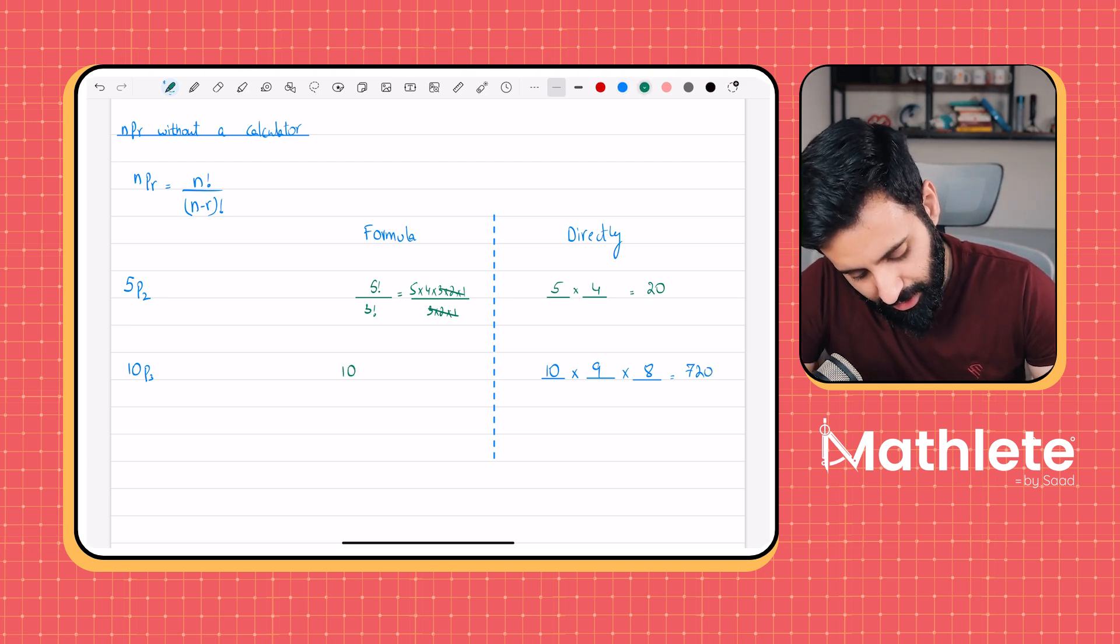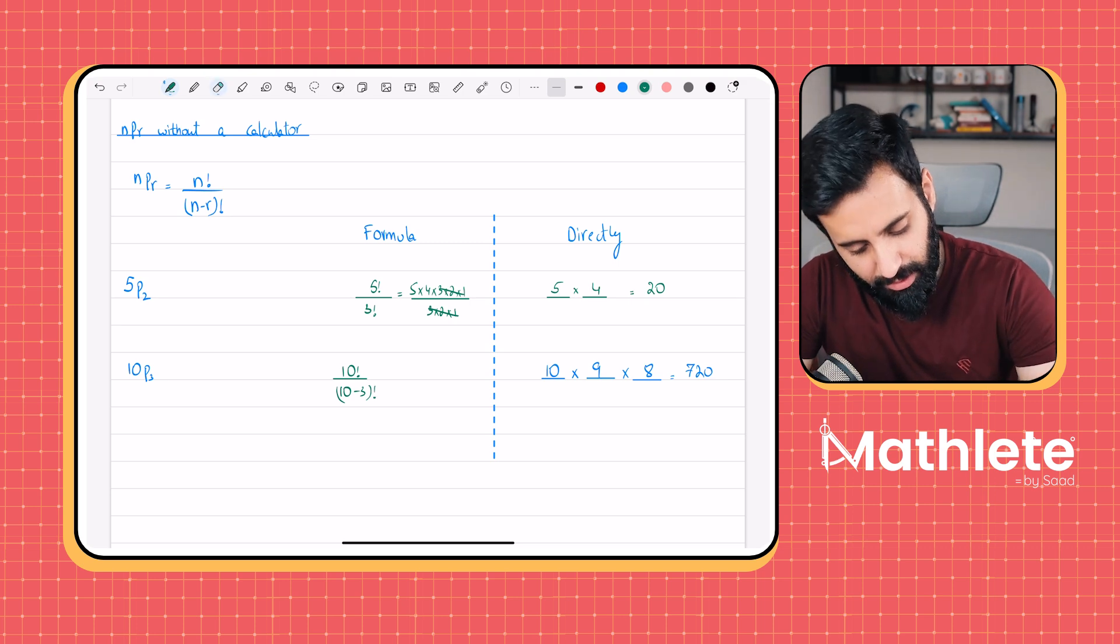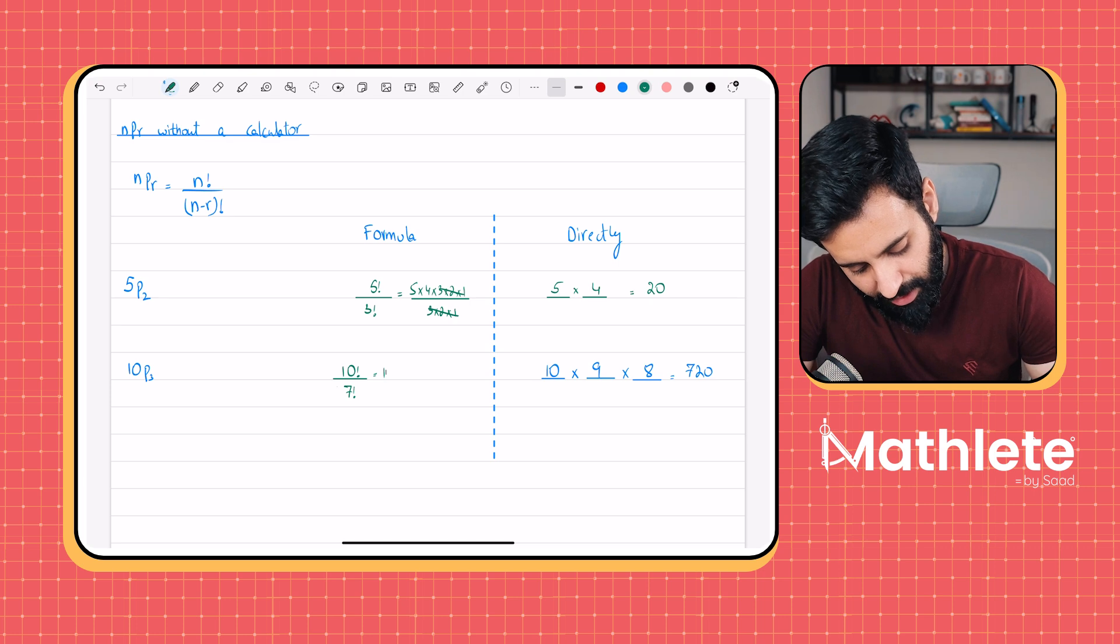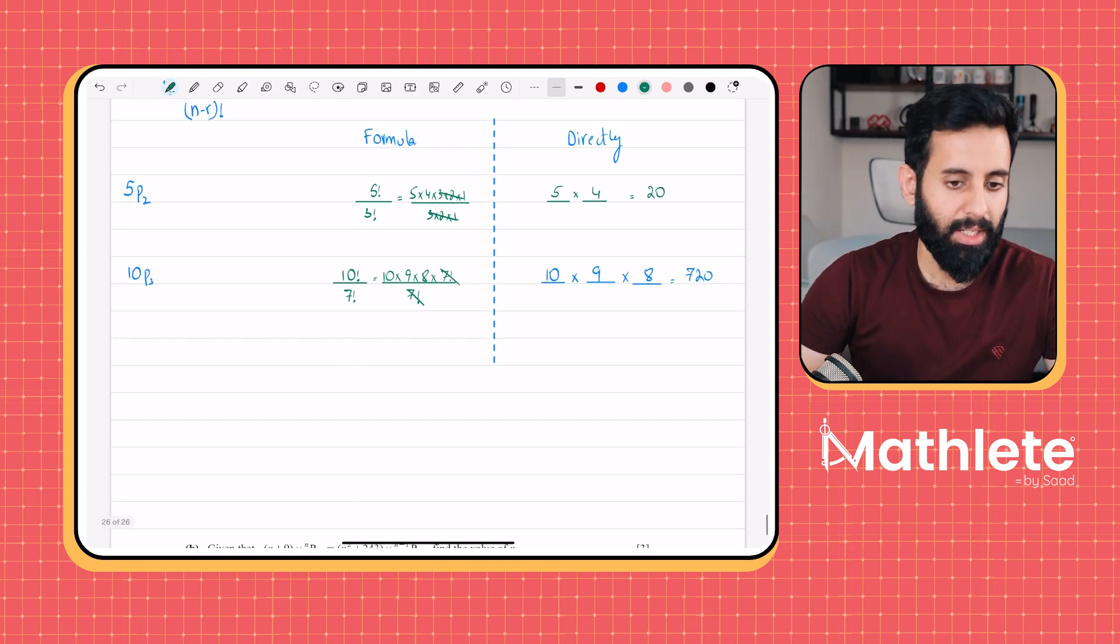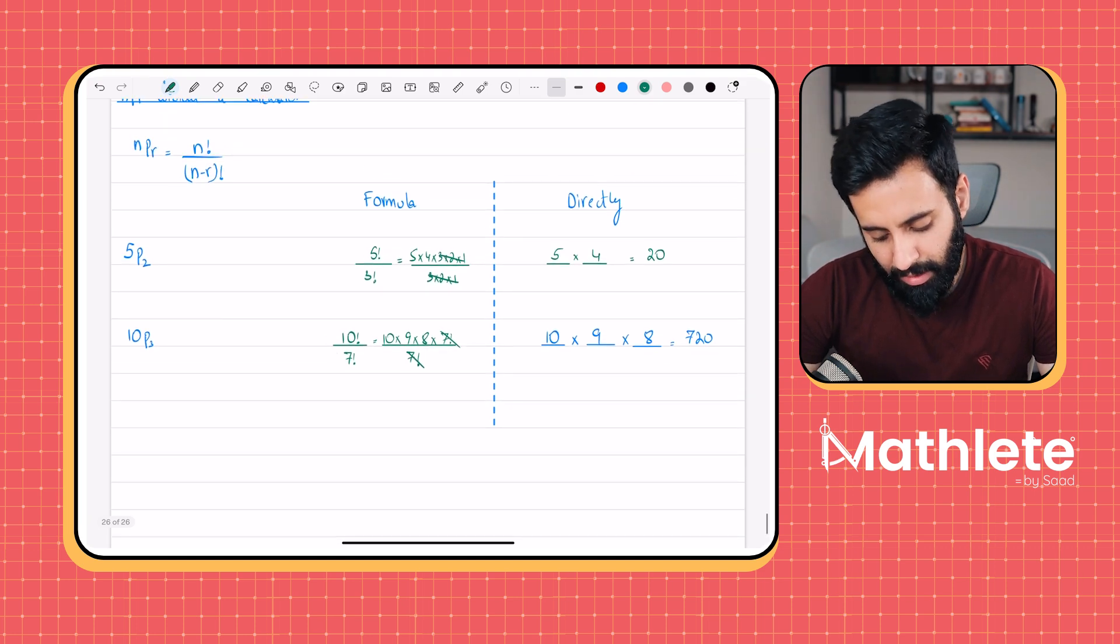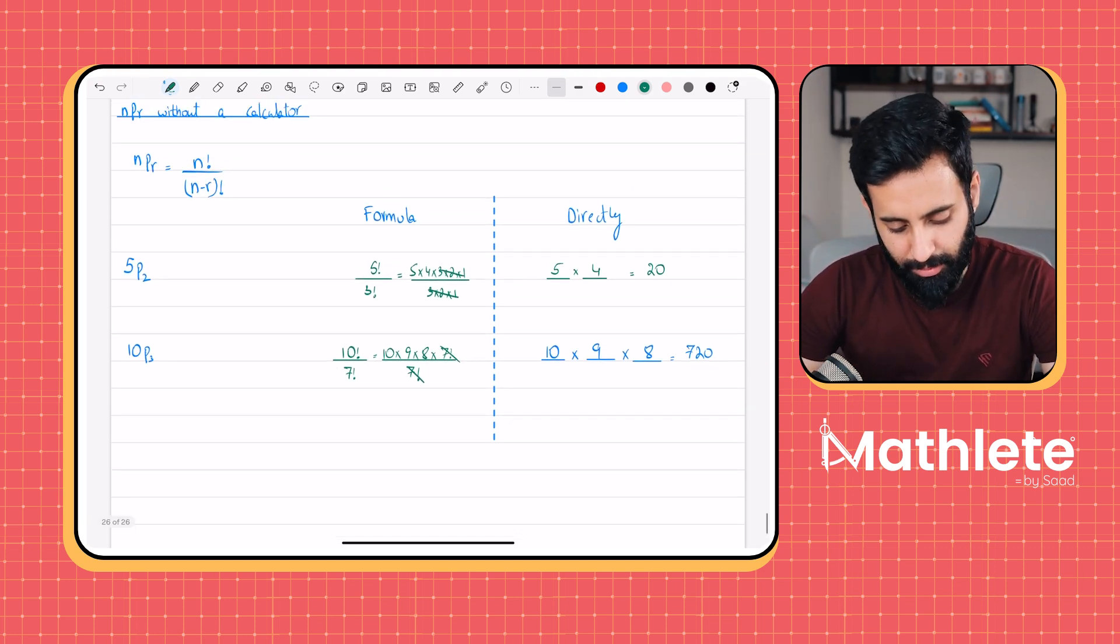How do we do this with the formula? So with the formula, this would be 10 factorial over 10 minus 3 factorial, or simply 7 factorial. So you can write it as 10 into 9 into 8 into 7 factorial. And in the denominator, you have 7 factorial as well. So 7 factorial cancels, and this is what you're left with. So this is how you can do it directly and how you can do it with the formula.